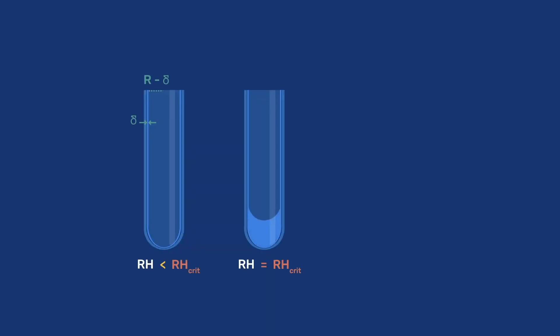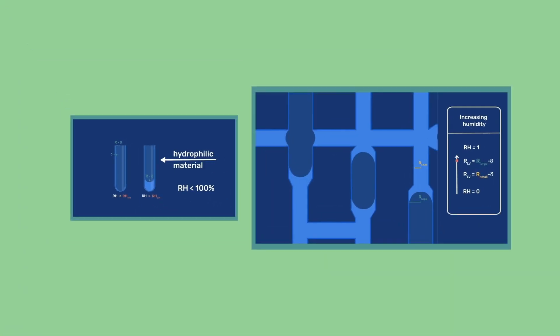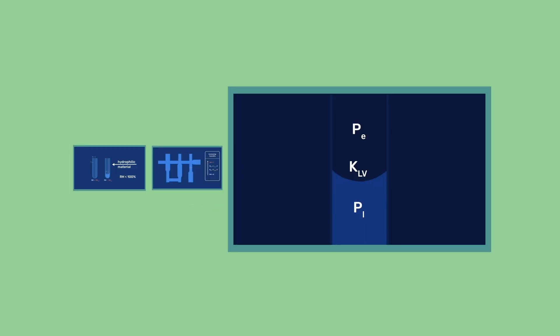In conclusion, water can condense in capillaries of hydrophilic materials at relative humidity below 100%. The humidity at which this happens depends on the pore size, which implies that materials with a pore size distribution gradually fill their pores with water until full saturation is reached. The condensed liquid has a radius of curvature, which implies a negative pressure in the liquid. This has important implications for drying, as discussed in our next video.